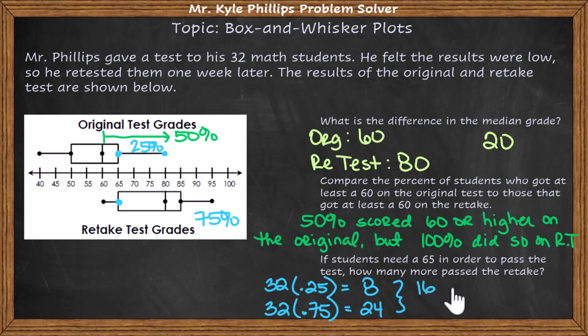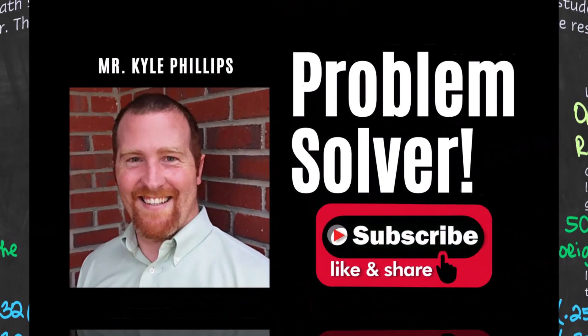So there were 16 more students who passed. This is how we can compare two different box and whisker plots. That's all for this video — I hope you found it helpful. If you have any questions, please leave them in the comments, and we'll see you in the next video.